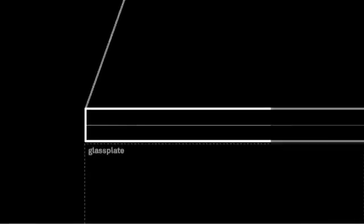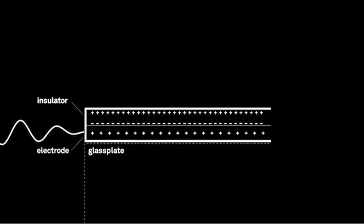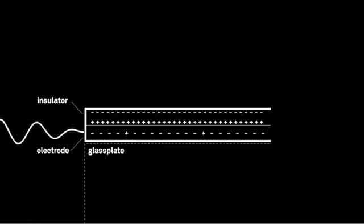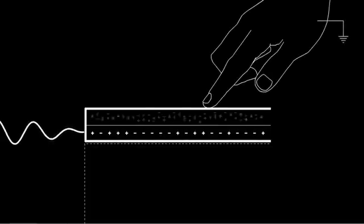The tactile panel consists of a glass plate, covered by a transparent electrode, and a thin insulation layer. A periodic electrical signal applied to the transparent electrode displaces charges within the insulation layer, creating an oscillating electric field.